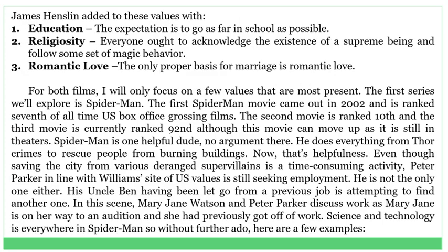James Henslin added to these values with number one: education — the expectation is to go as far in school as possible. Number two: religiosity — everyone ought to acknowledge the existence of a supreme being and follow some set of moral behavior. Number three: romantic love — the only proper basis for marriage is romantic love.